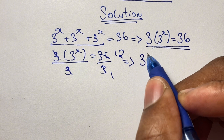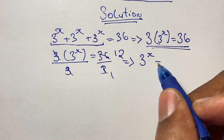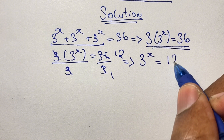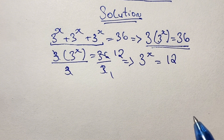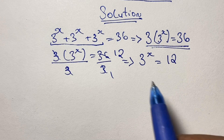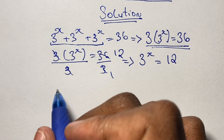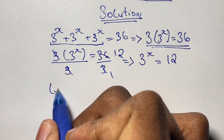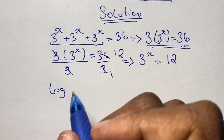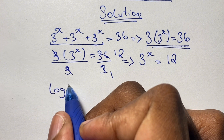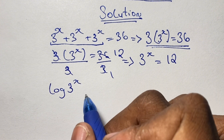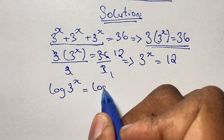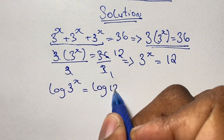That leaves us with 3 to the power of x is equal to 12. From here we can start solving the value of x. We want to find the value of the exponent x, so we take logs and we say the log of 3 to the power of x is equal to log of 12.